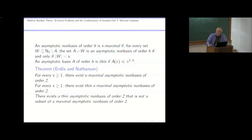And there's a thin asymptotic non-basis of order 2 that is not contained in a maximal asymptotic non-basis of order 2. The example of Hennefeld essentially has positive density — it's basically a congruence class.